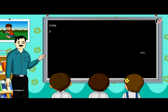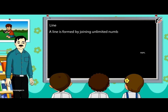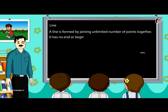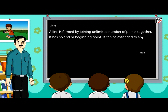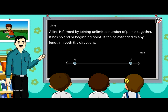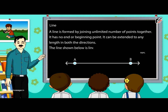Line. A line is formed by joining unlimited number of points together. It has no end or beginning point. It can be extended to any length in both directions. The line shown below is line AB.